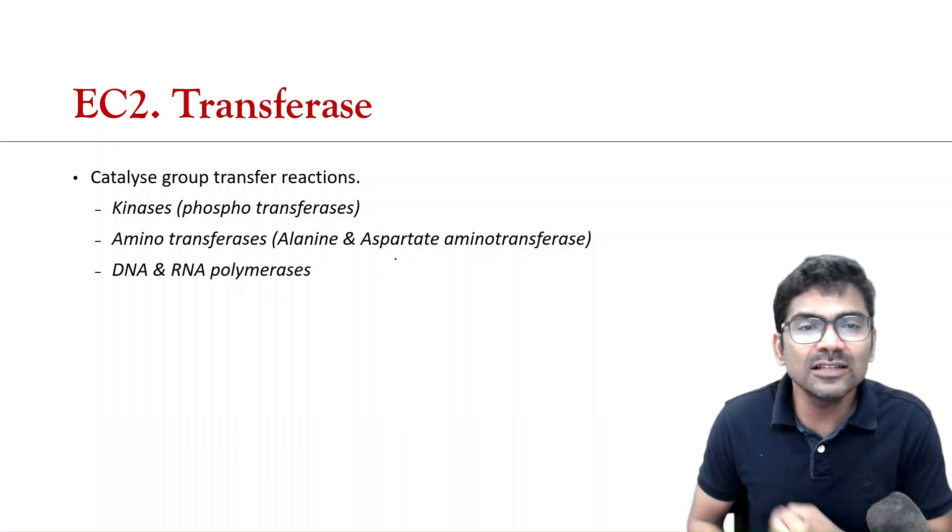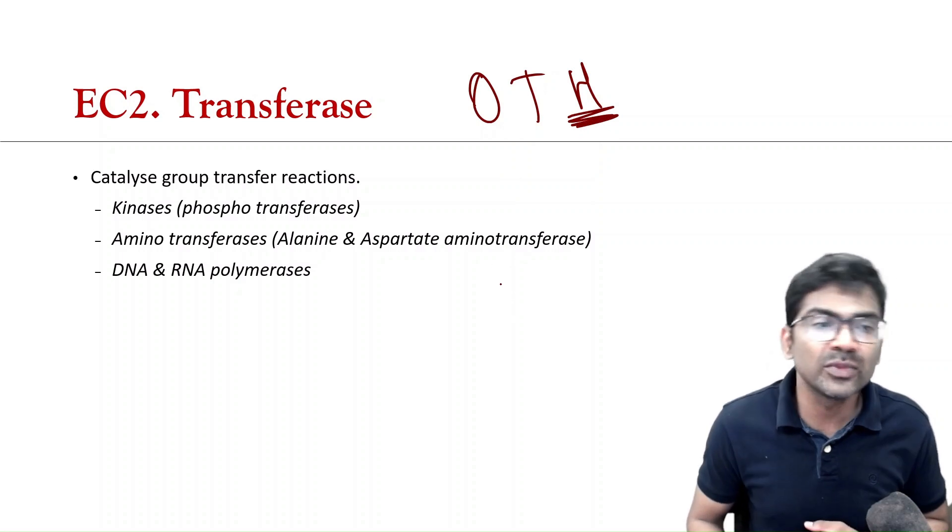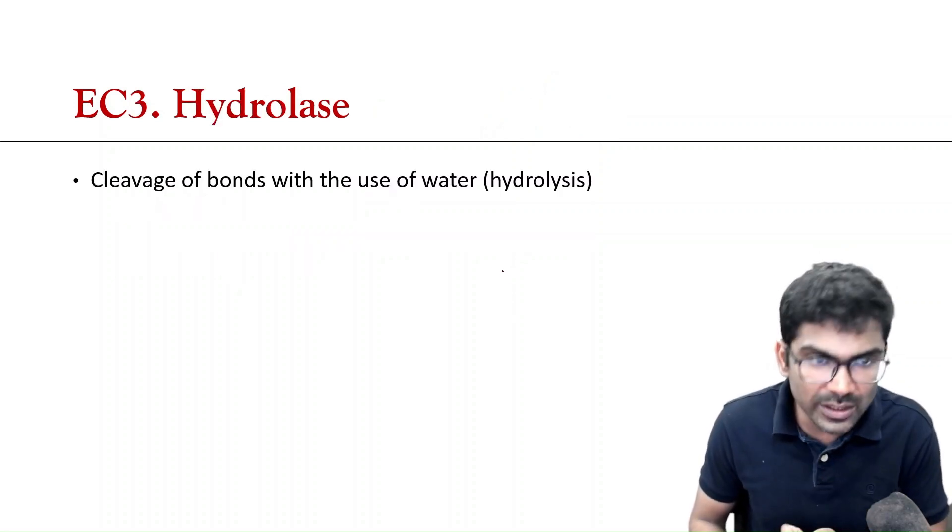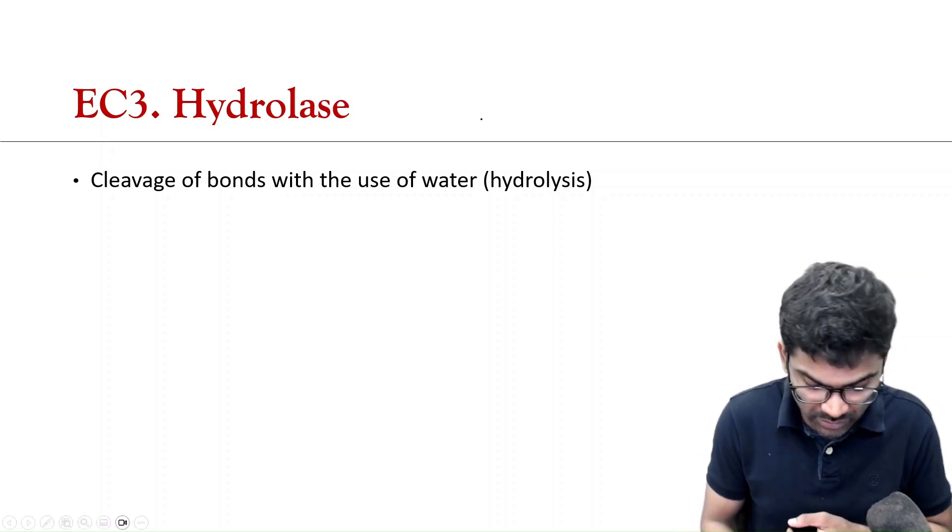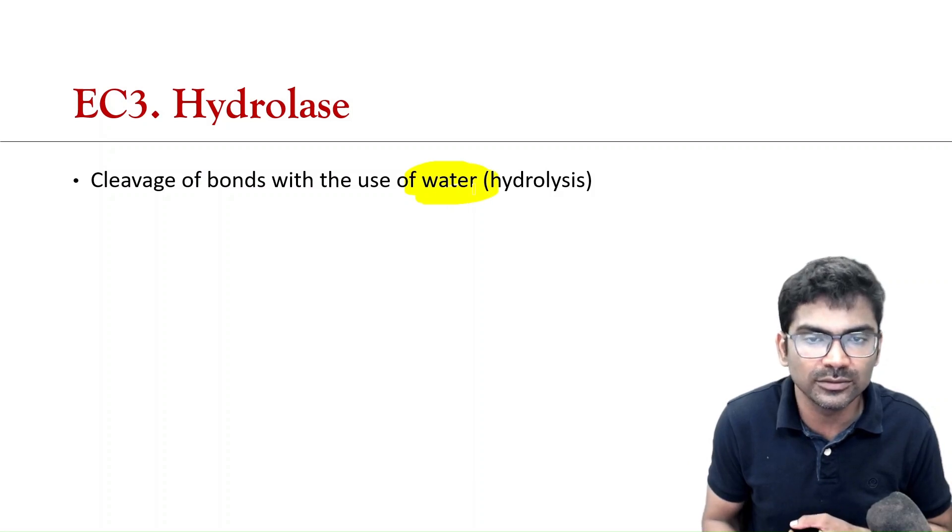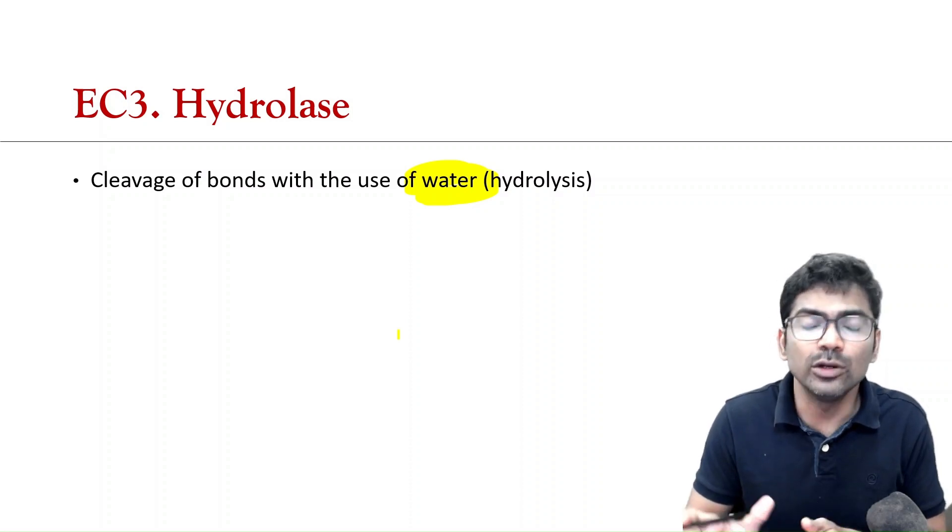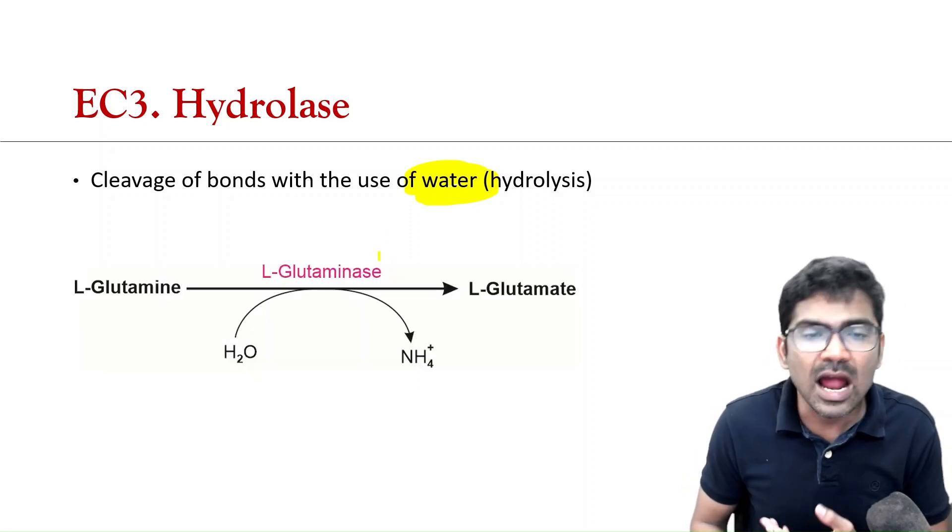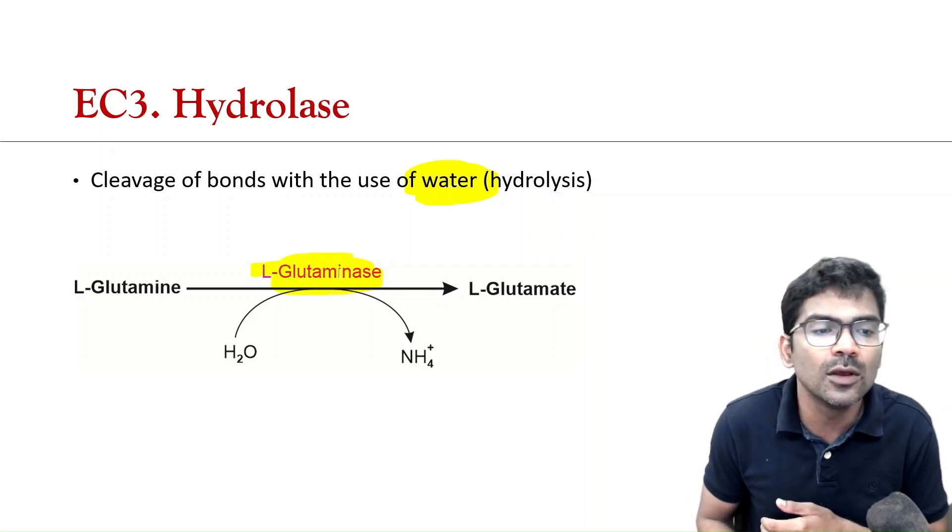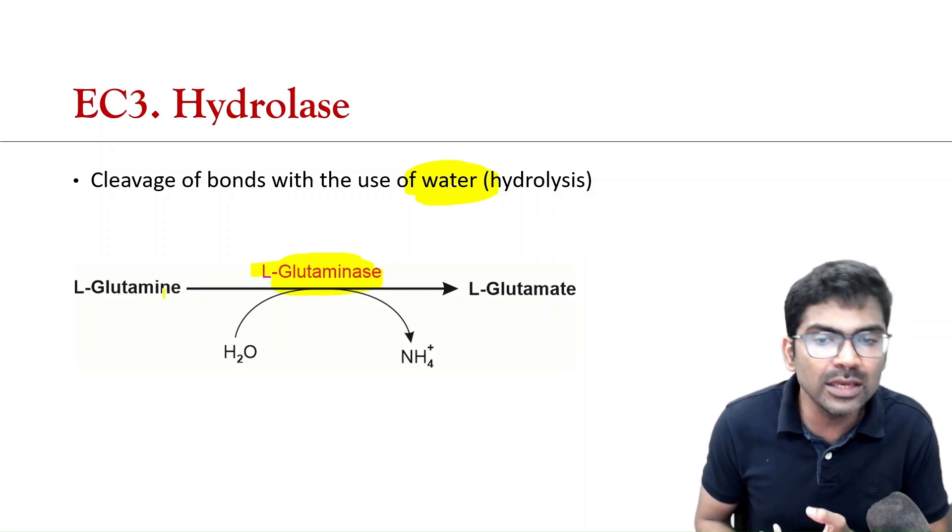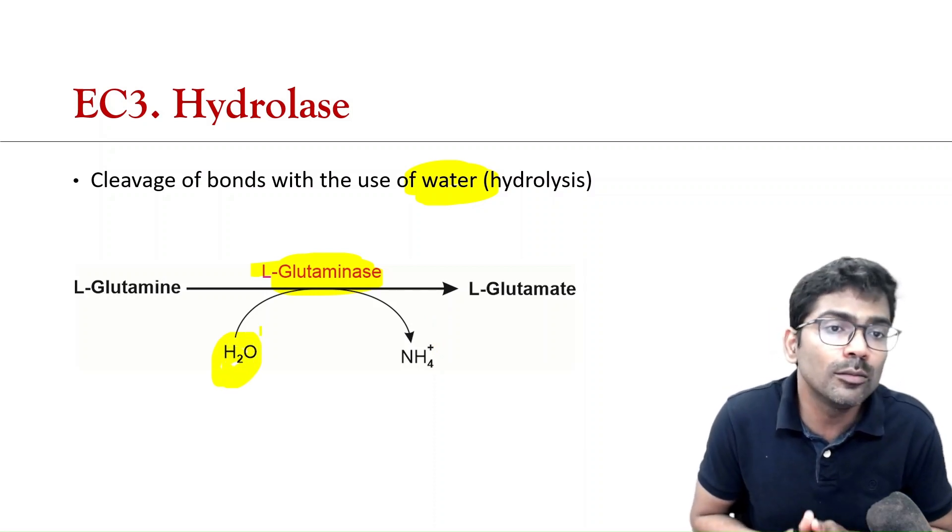So, what is the third class of enzyme? Remember the mnemonic OTH. So, the third is H. H stands for hydrolase. You all know, hydrolases are the enzymes which break molecules with the help of water. All the digestive enzymes are hydrolases. I will give you another example which is not a digestive enzyme. Glutaminase. So, this enzyme hydrolyzes glutamine to glutamate and ammonia. Water is used in breaking the bonds.